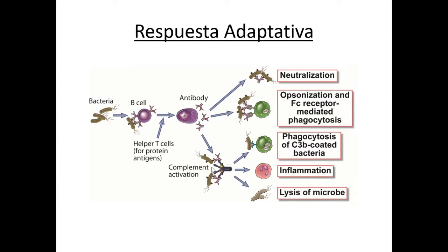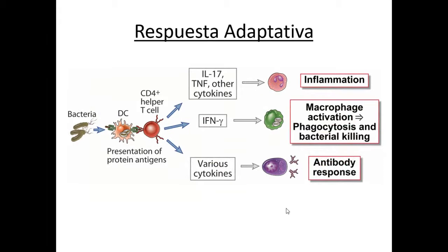El complemento forma las anafilotoxinas C3a y C5a, favoreciendo la generación de infiltrados inflamatorios ricos en polimorfos nucleares. C5a también activa polimorfos nucleares para cumplir su función de fagocitosis y eliminación de antígenos. Finalmente, si la cascada de complemento se activa de forma eficiente, se van a destruir las bacterias provocando lisis osmótica. La molécula que produce la lisis osmótica es C9, una perforina que al activarse se polimeriza y se enclava en las paredes bacterianas.